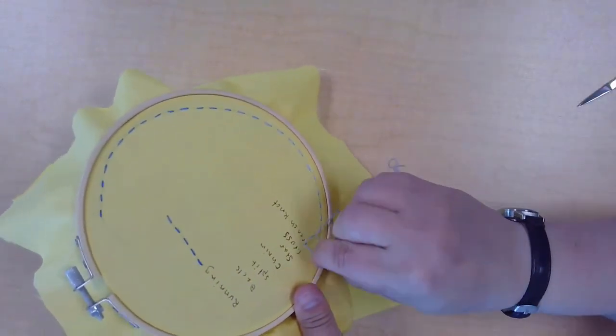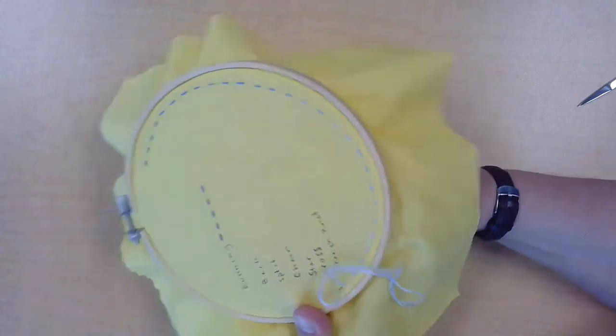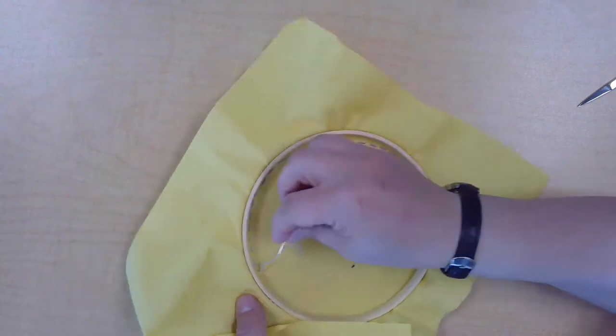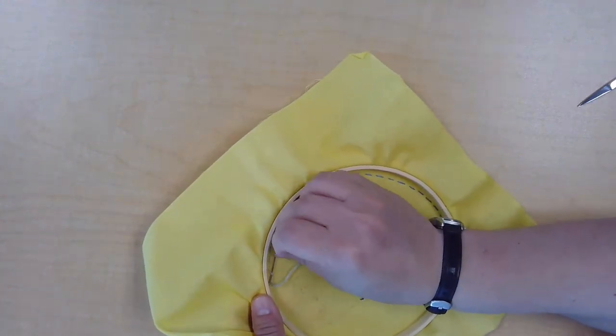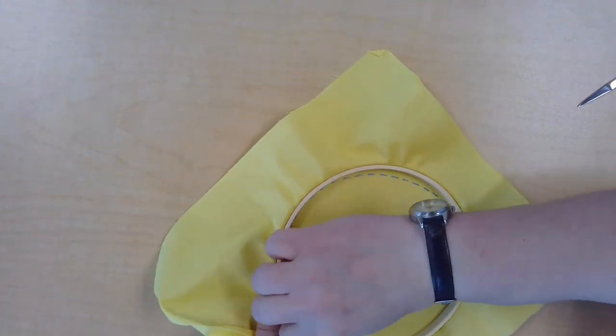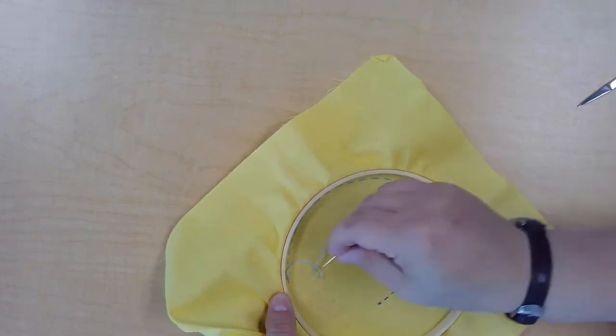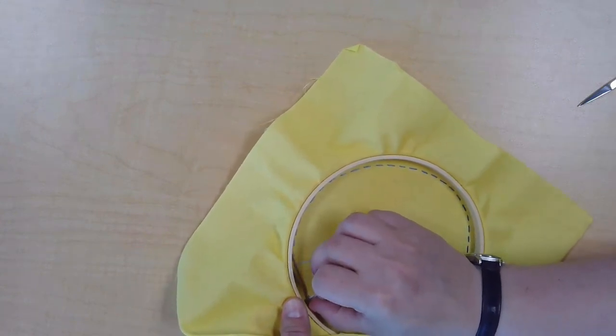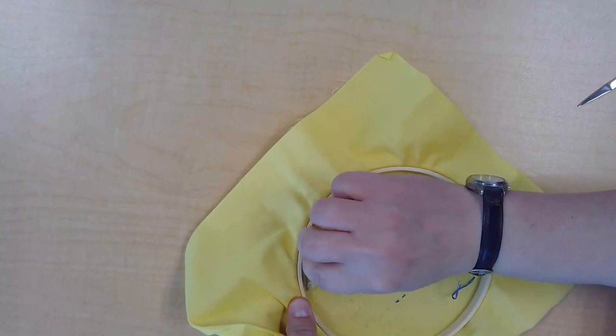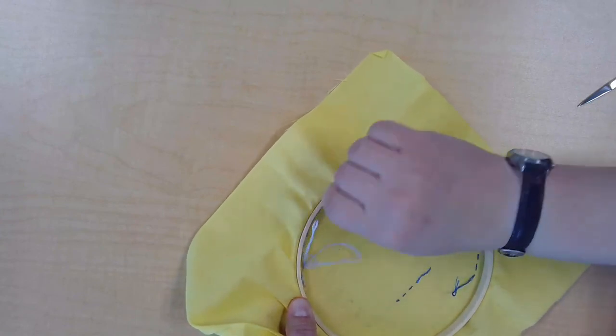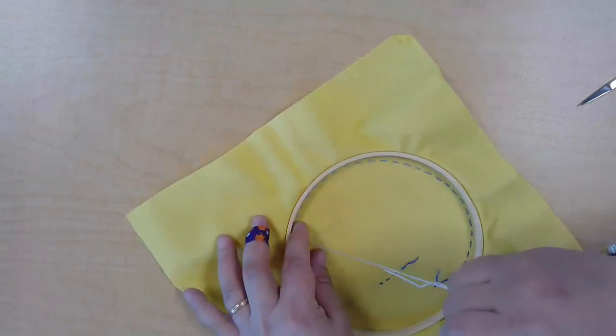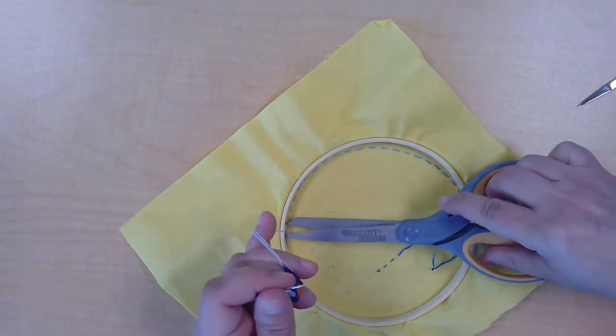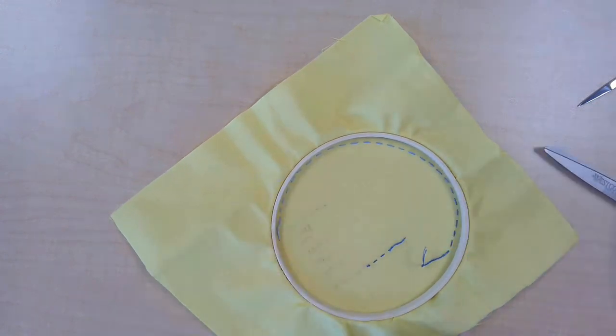And then I'll show you how, again, how to finish off and anchor your stitches on either side. So, again, you're just going to slide your thread through some stitches on the back, making sure it doesn't puncture the fabric on the front. And this will anchor your stitches down. You can just trim it close to the edge there.